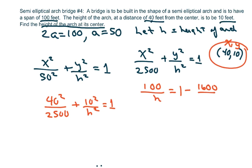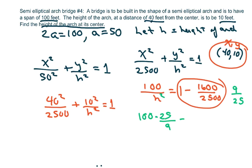So I'm going to cross multiply. I get 100 × 25/9 = h², and this gives 50/3.